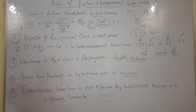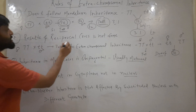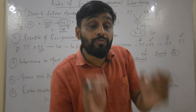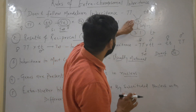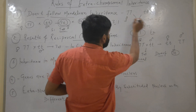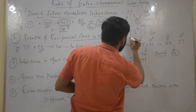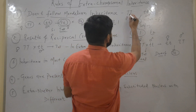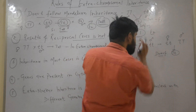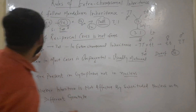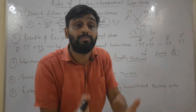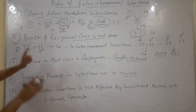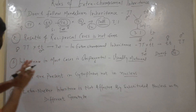The second rule is that results of reciprocal crosses are not the same. In Mendelian inheritance, reciprocal crosses always give the same result — whether female is tall crossed with male dwarf, or male is tall crossed with female dwarf, the ratio is always 3:1 tall. But in extra-chromosomal inheritance, results of reciprocal crosses are different.